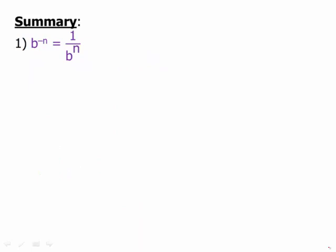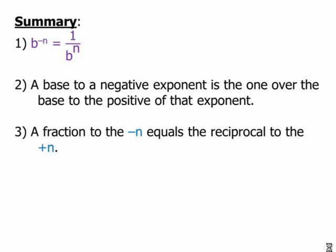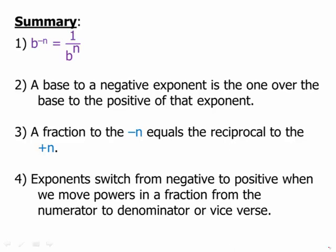In summary, b to the negative n equals 1 over b to the n. A base to a negative exponent is 1 over the base to the positive of that exponent. A fraction to the negative n equals the reciprocal to the positive n. We can flip over a fraction and get rid of the negative in the exponent. And exponents switch from negative to positive when we move them in a fraction from numerator to denominator or vice versa.